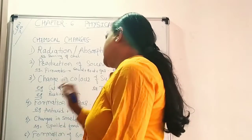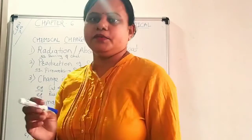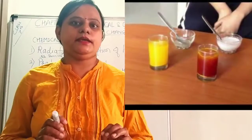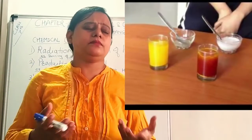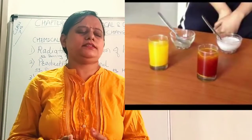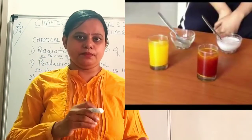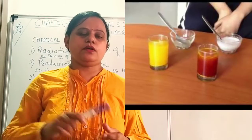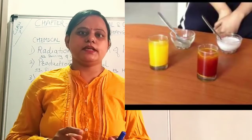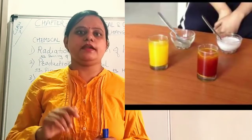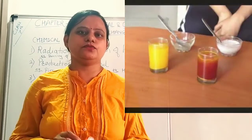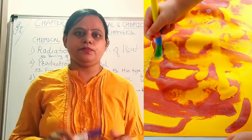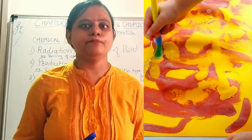Another example of color change: we can use turmeric and acid — for example, lemon juice. If you mix turmeric powder paste with an acid like lemon juice, it turns red. This color change is the result of the chemical reaction.